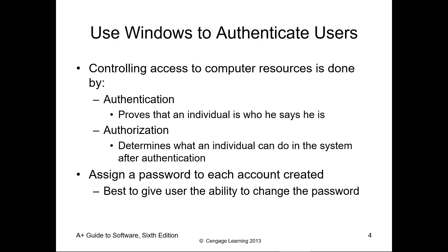There's a third factor, which is biometrics. Our bank could require two out of the three, or all three, depending on how the account is set up. Once you've proven who you are, then authorization determines if you're able to do what you're trying to do. For example, can you go to your ATM and withdraw $5,000? You may be authorized to withdraw money, but are you authorized to withdraw that much?